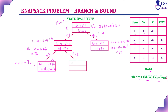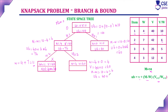Consider without adding the second item. Weight is previously 4 plus 0 currently, so weight is 4 only. Value is previously 40 plus 0 currently, so value is 40 only. W is 4, M minus W is 10 minus 4 = 6. The upper bound value is: V = 40 plus 6 multiplied by the value-by-weight ratio of the next item, which is 5. So 40 plus 30 gives upper bound value 70. This is the only promising node.